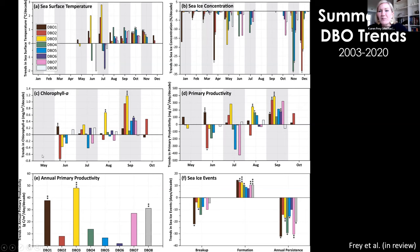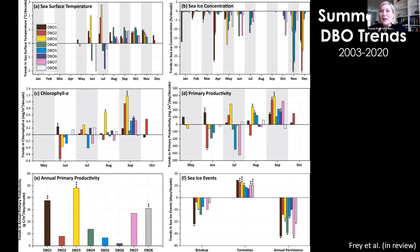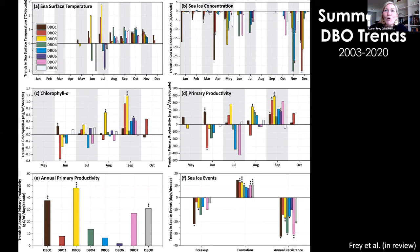Annual primary productivity can be summarized in terms of overall trends. DBO3 is most significant at 99%. DBO1 also sees some pretty strong changes overall. DBO8 as well, which is up near the Cape Bathurst Polynya. We see trends in breakup, formation, and annual persistence across the board. The basic takeaway is that we start to see consistently significant trends in the later months — September, October, November — and more heterogeneity in trends in the early seasons.